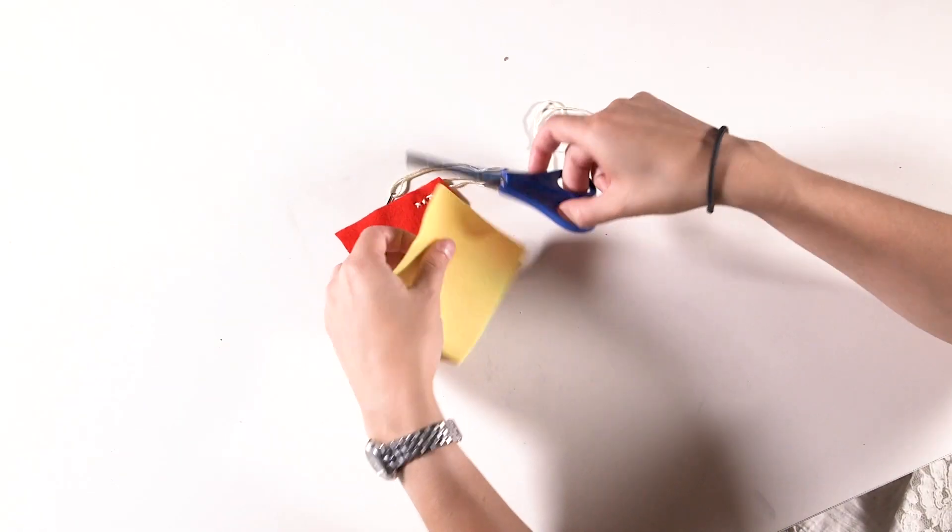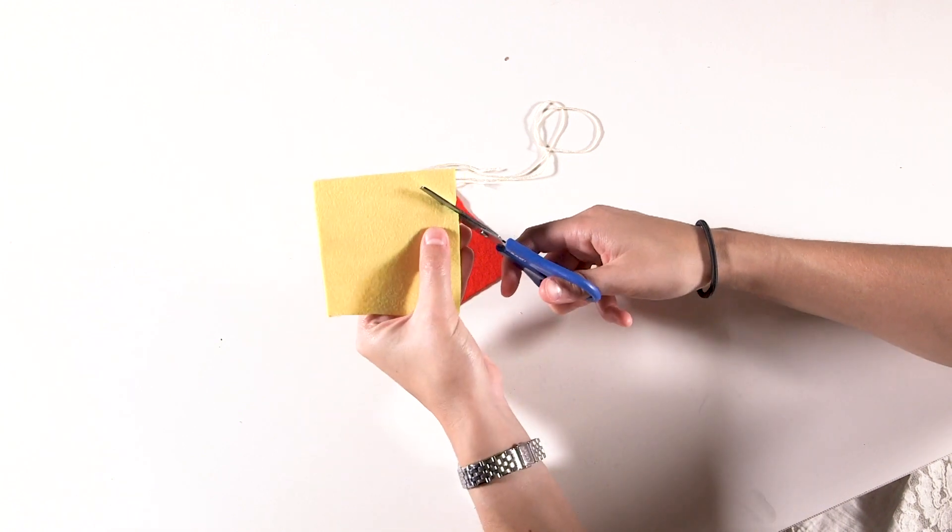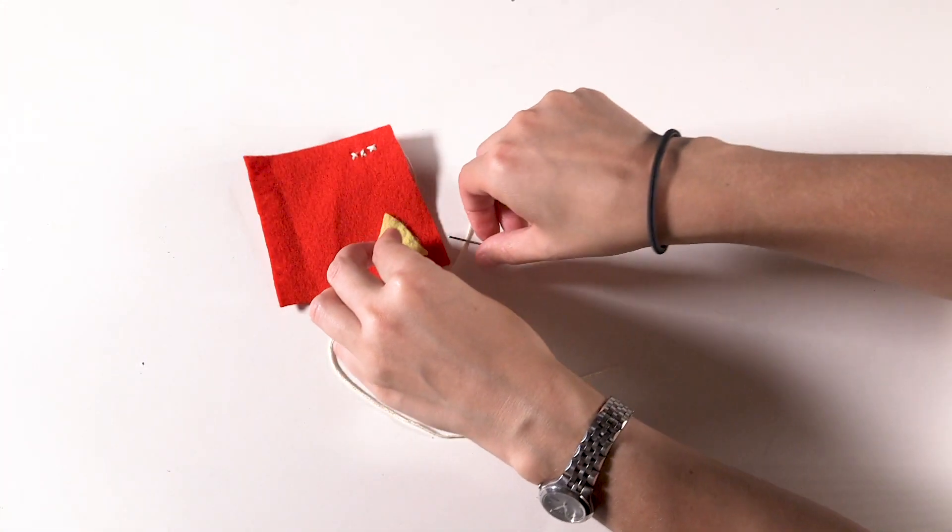Begin by neatly cutting the shape you want out of material and laying it on top of your other piece. Contrasting colours or textures work really well.